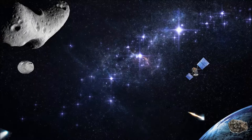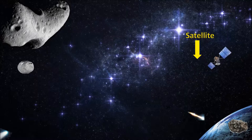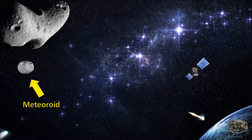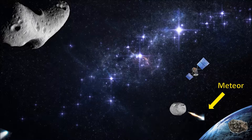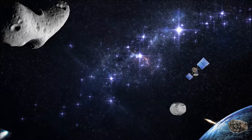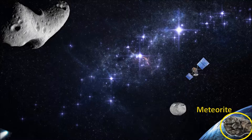Let's get some of the space objects that are in the sky around us. One is a satellite. There are many satellites that orbit our Earth. Next is a meteoroid. And when a meteoroid hits Earth's atmosphere, it is classified as a meteor. Once that meteor hits Earth, it is then called a meteorite.